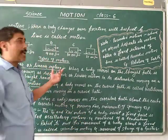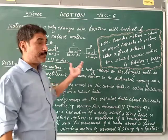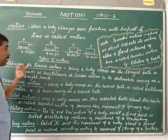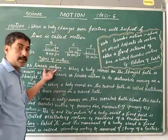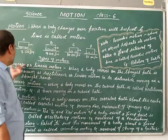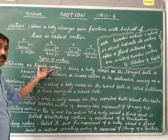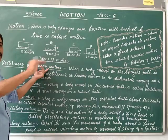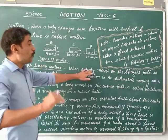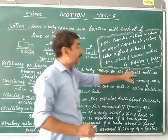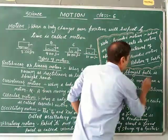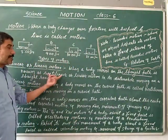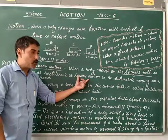Now, types of motion. There are different types of motion that occur in our surroundings. First, rectilinear or linear motion — both are the same. Linear means a straight path, a straight line. When the body moves on a straight path, it is known as rectilinear or linear motion.